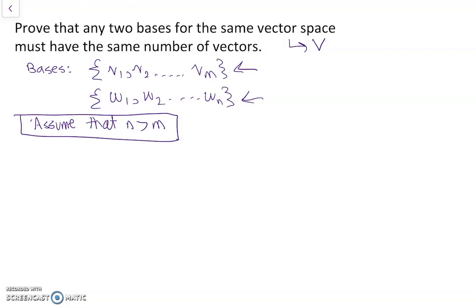So we can write each of the W's in terms of the V's. So we can write W1 as A11V1 plus A21V2 plus dot dot dot plus AM1Vm. We can also write W2 as A12V1 plus A22V2 plus dot dot dot plus AM2Vm, and so on, up to Wn.